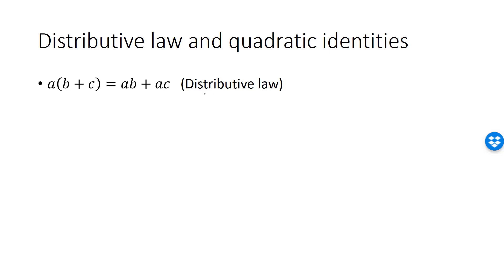The distributive law is valid for all real numbers and we write it in the following way. A times parenthesis B plus C is the same as A times B plus A times C. It's called a distributive law as short for saying that multiplication distributes over addition.